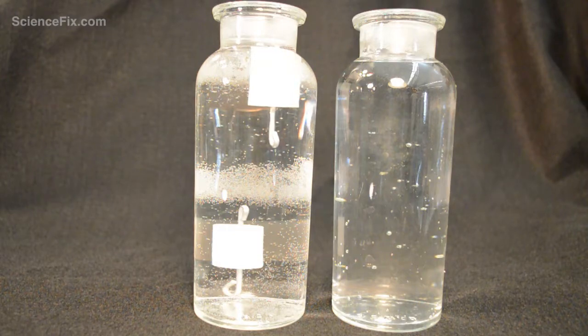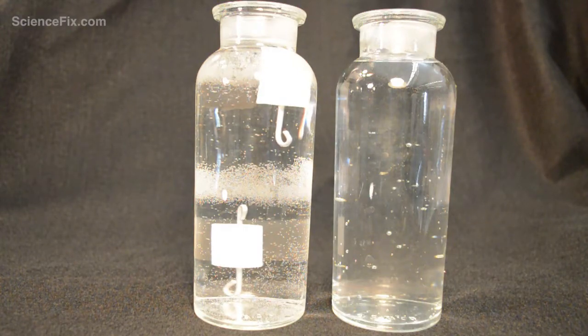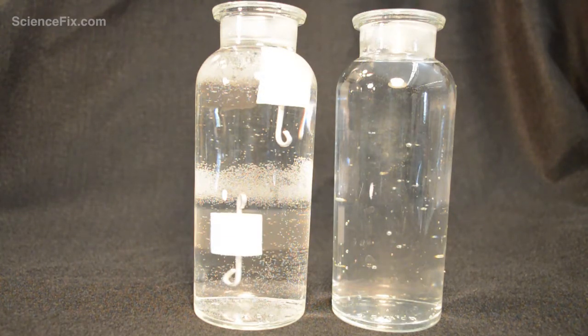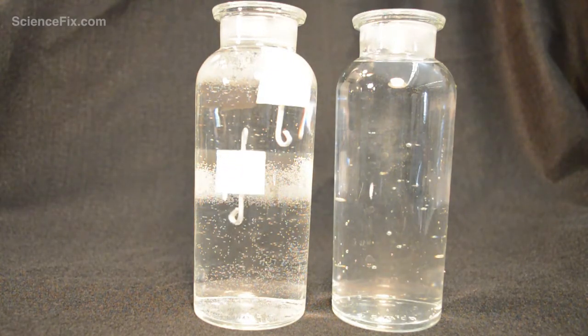And so the density of the object becomes less than the density of the water and it rises to the top. Whereas in the other bottle of water, it's colder. That object's density is already less than the density of the water. The density of the water is higher because it's colder. The colder the liquid, the higher the density.